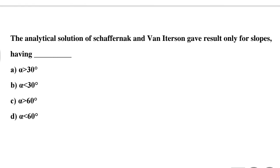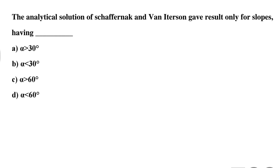Question 17: The analytical solution of Schaffernak and Van Iterson gave a result only for slopes having — Option A: α greater than 30°, Option B: α less than 30°, Option C: α greater than 60°, Option D: α less than 60°. The correct answer is Option B: α less than 30°.